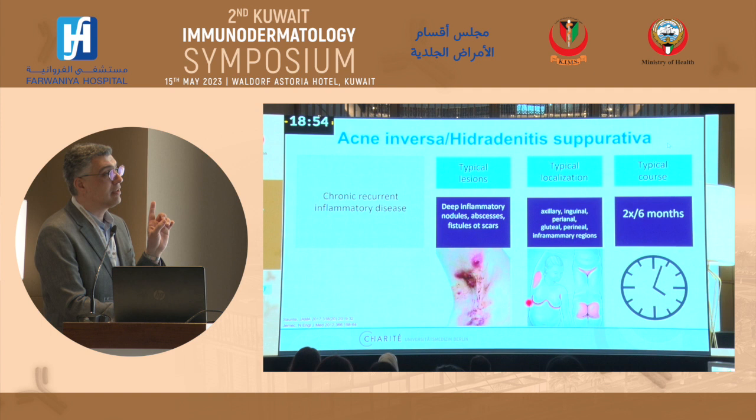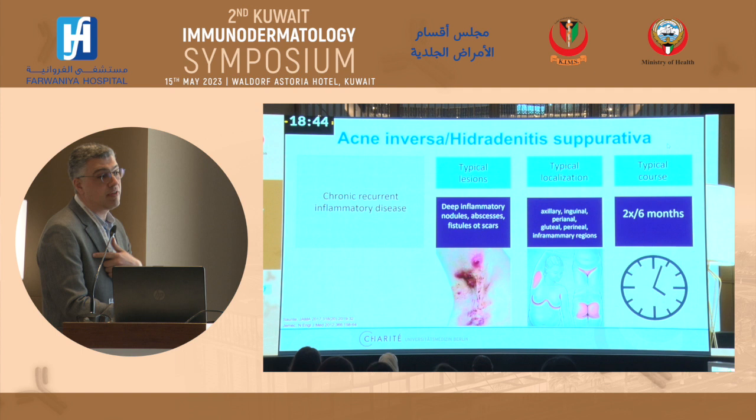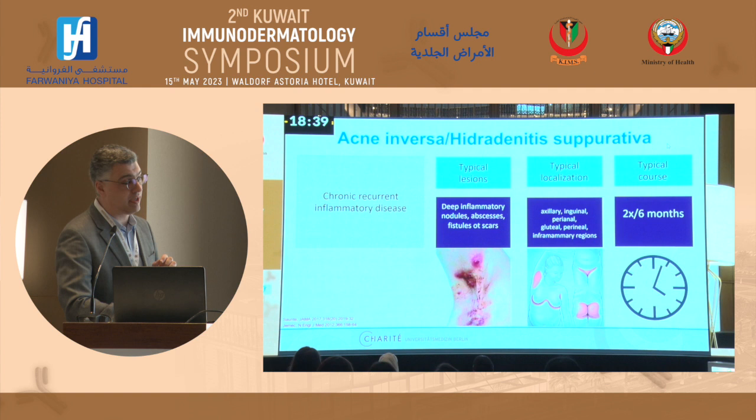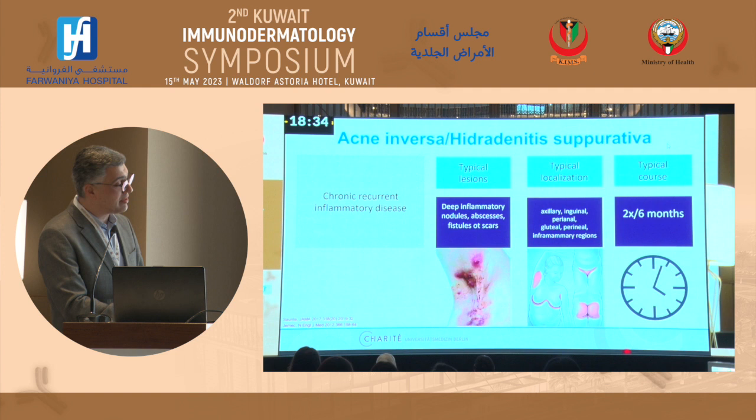You also need the typical localizations like axillary areas, inguinal areas, submammary and inframammary areas. And you need the typical course of the disease — abscesses in these areas at least twice every six months. If you have an abscess in this area just once, this is not HS; that may be inflammation from bacteria or something else. You need all three factors, and if all three are positive, then you have the diagnosis of HS.